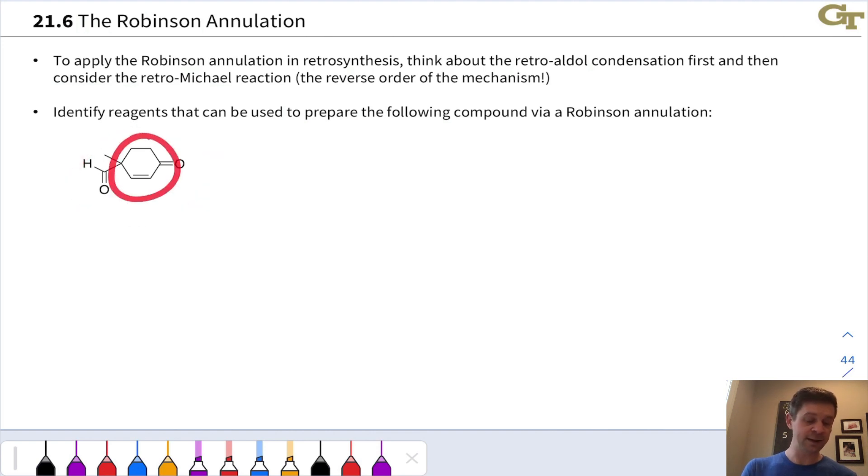With a six-membered ring, a cyclohexenone like this, there needs to be a C=O inside the ring in conjugation with the C=C, and we need a carbonyl group specifically at this position, which we can think of as the alpha beta gamma carbon with respect to the carbonyl group inside the ring.